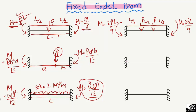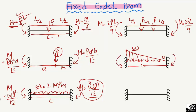The fifth case is a uniformly varying (triangular) load on a fixed-ended beam, where the load starts from zero at one end and reaches a maximum of W at the other end, over a total length L. In this case the moment values at the two ends are different: the moment at the zero-load end equals WL²/30, and the moment at the maximum-load end equals WL²/20, where W is the maximum intensity of the triangular load.